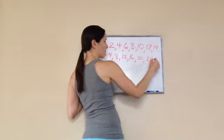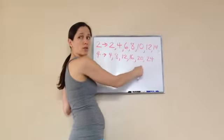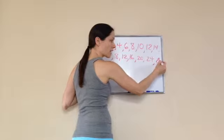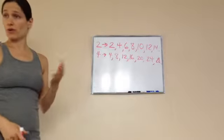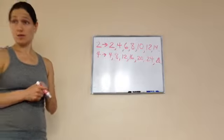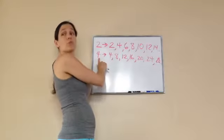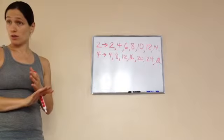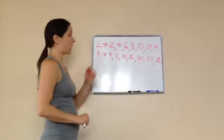You're just adding 4 to every number every time. Yeah, 4 more would be 28, 4 more would be 32, 4 more would be 36, 4 more would be 40. Do you see the difference between factors and multiples?